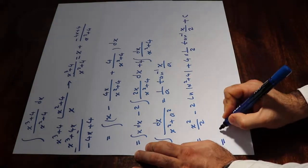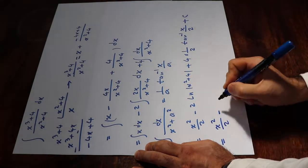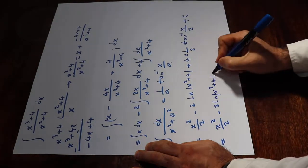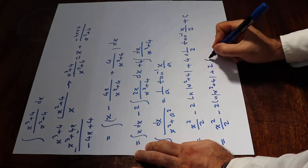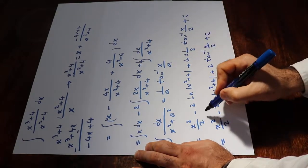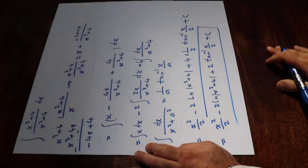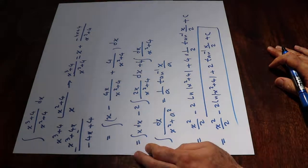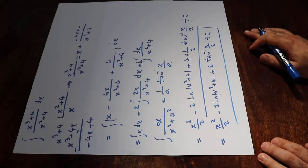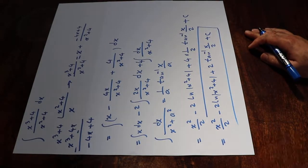So you can write the final answer as x² over 2 minus 2 ln(x² plus 4) plus 2 arctan(x over 2) plus C, where C is the constant of integration. This is the solution to our integral. I hope you found this video helpful — please feel free to subscribe to the channel so you can be notified when I upload new videos. Thank you.